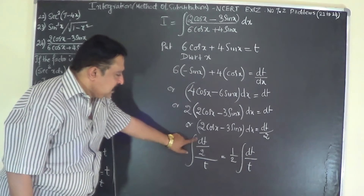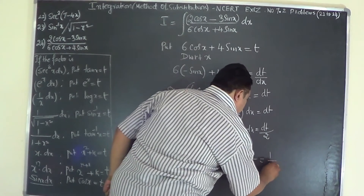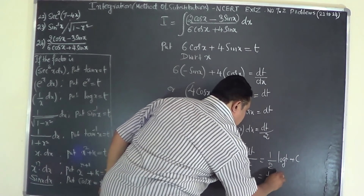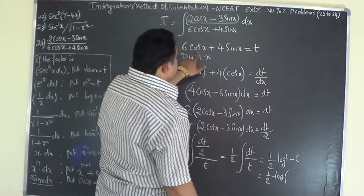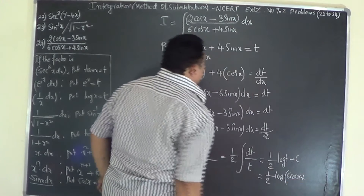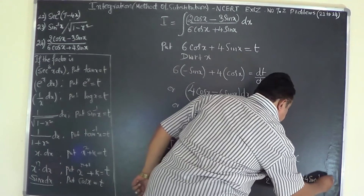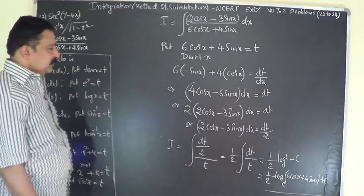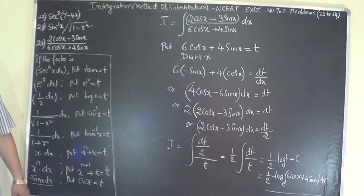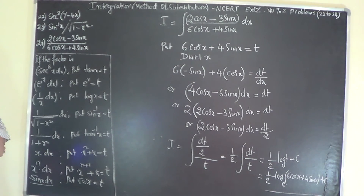Taking 1/2 outside, we have dt/t, so I = 1/2 × log(t) + C. Substituting back, t = 6cosx + 4sinx, so the answer is I = 1/2 × log|6cosx + 4sinx| + C. That completes 24 problems in exercise 7.2.